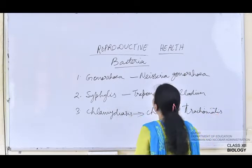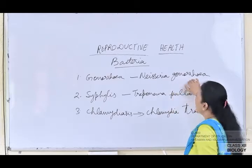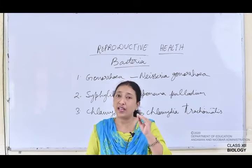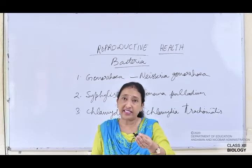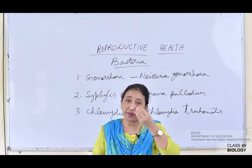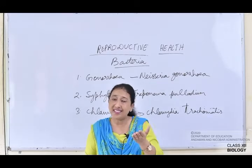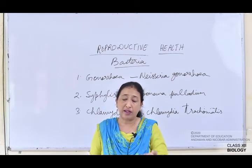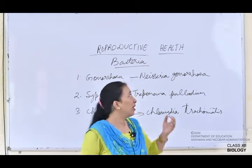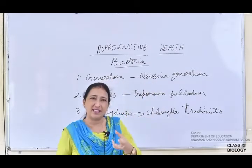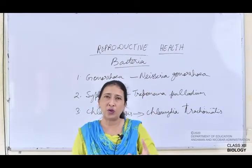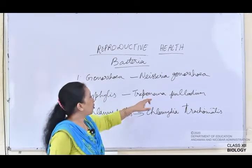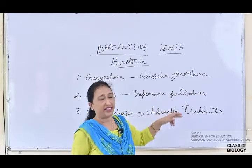Neisseria gonorrhoeae is found in the urethra and genital regions, and even the throat in both males and females. It is also found in the female vagina. The symptoms of gonorrhea are ulcers, pus, and swollen nodes. Syphilis is caused by the bacteria Treponema pallidum.